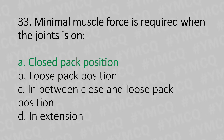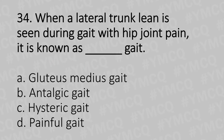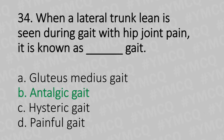Moving to our 34th question. When a lateral trunk lean is seen during gait with hip joint pain, it is known as what gait? Option A: Gluteus medius gait. Option B: Antalgic gait. Option C: Hysteric gait. Option D: Painful gait. And the answer is Option B: Antalgic gait.